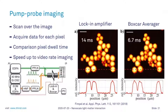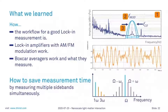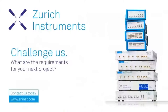To summarize: we covered a workflow for a good lock-in measurement, learned how a lock-in amplifier with AM-FM demodulation works and what it can measure, and learned what a boxcar averager does. The real take-home message is how you can save measurement time in the lab — for example, by measuring multiple sidebands simultaneously in one measurement. Thanks for your attention, and back to you, Romain.